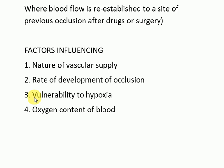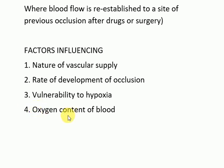The fourth factor is oxygen content of the blood. The partial pressure of oxygen in the blood also determines the outcome of vascular occlusion. Even partial flow obstruction of a small vessel in an anemic or cyanotic patient may lead to tissue infarction, because these patients have decreased partial pressure of oxygen.